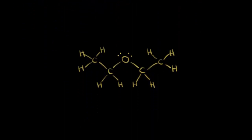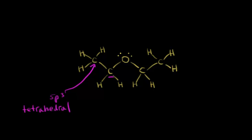Let's move on to another example. This molecule is diethyl ether. Let's start with this carbon right here. The fast way of doing it is to notice that there are only single bonds around that carbon — only sigma bonds — so therefore we know that carbon is sp3 hybridized with tetrahedral geometry. Let's look at this carbon right here. It's the exact same situation — only sigma or single bonds around it — so this carbon is also sp3 hybridized with tetrahedral geometry.